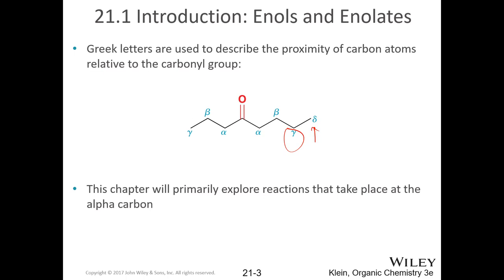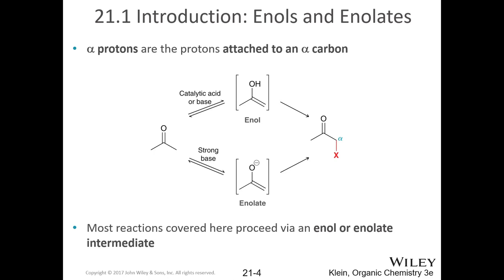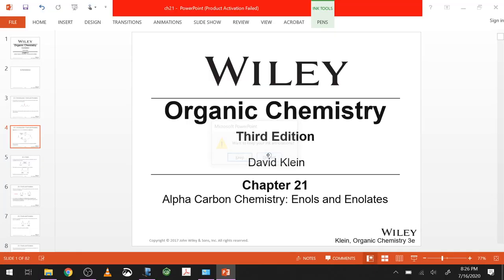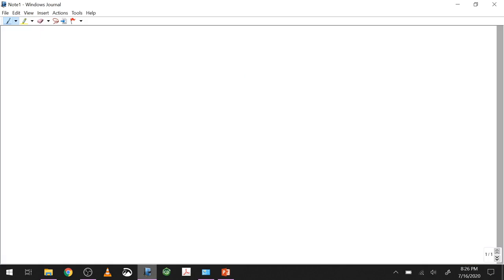We're spending most of our time on what's next to the carbonyl group, and we'll approach it two ways: under acidic conditions we deal with something called an enol, and under basic conditions something called an enolate. That's not new — your book doesn't call you out on it, but I will. You've seen this before: last semester when you did oxymercuration.